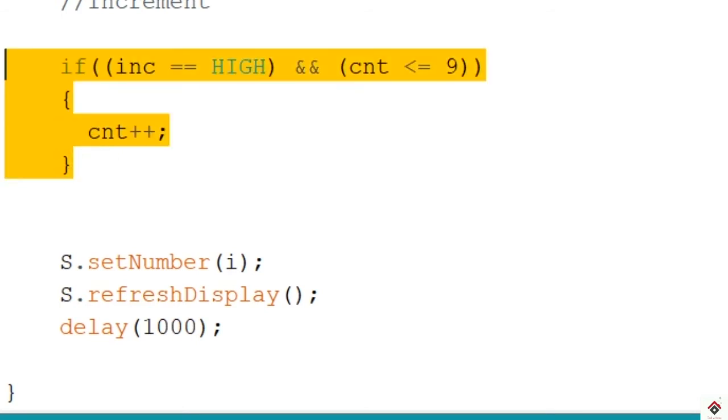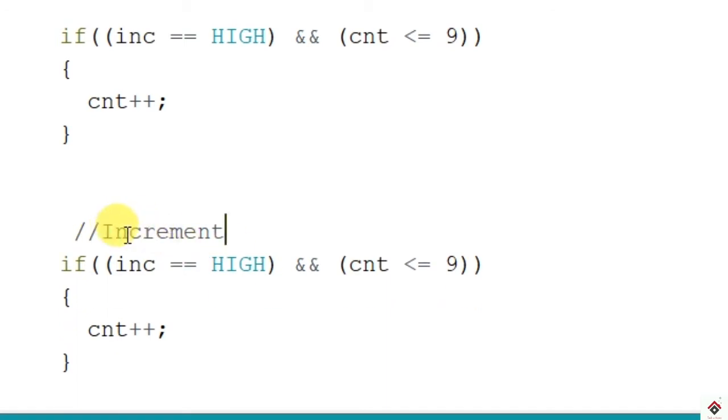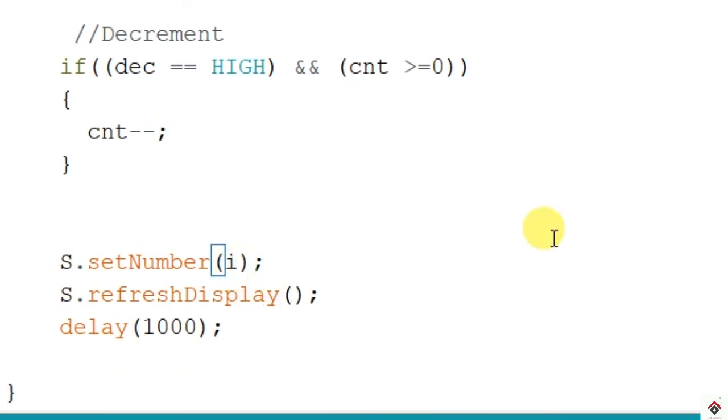And we will add one more if statement to decrement. Here we have to check the data from pin 10, which is the decrement variable if high, and you should not allow the value to go to the negative side. Here the condition will be greater than 0. So now the count stays from 0 to 9. This will be minus minus.